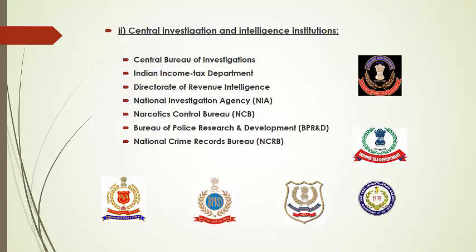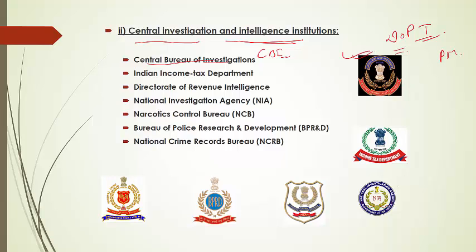Moving on to Central Investigation and Intelligence agencies — the CBI is one of the premier institutes responsible for a wide variety of criminal and national security matters. It is controlled by the Department of Personnel and Training under the Ministry of Personnel, Public Grievances and Pensions. It is headed by a Union Minister who reports directly to the Prime Minister. CBI is India's official Interpol unit and draws officers from the best IPS officers around the country. It specializes in investigating crimes involving high-ranking officials, government officers and politicians.